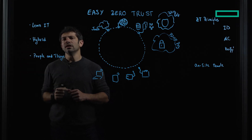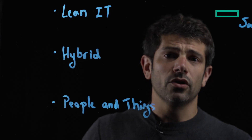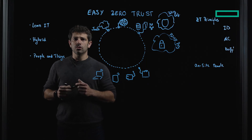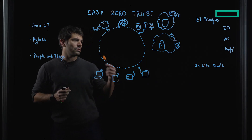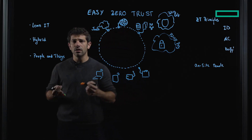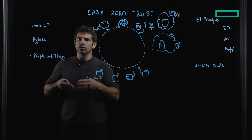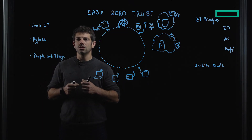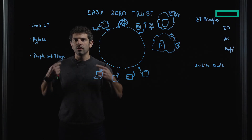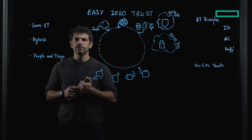Let's take as a starting point: we're a lean IT company, we have a hybrid workforce, and in our network we have people and we have things. As pretty much everyone, we're trying to adopt a Zero Trust strategy, and we're going to see here how we have our Zero Trust principles. We want to identify everything, we want to regulate access to everything — because of what you are, what device you're carrying, because of your context, not necessarily because you're plugged into this port or that port. And we need to verify constantly that you're doing the right thing and change your access whenever you're not.